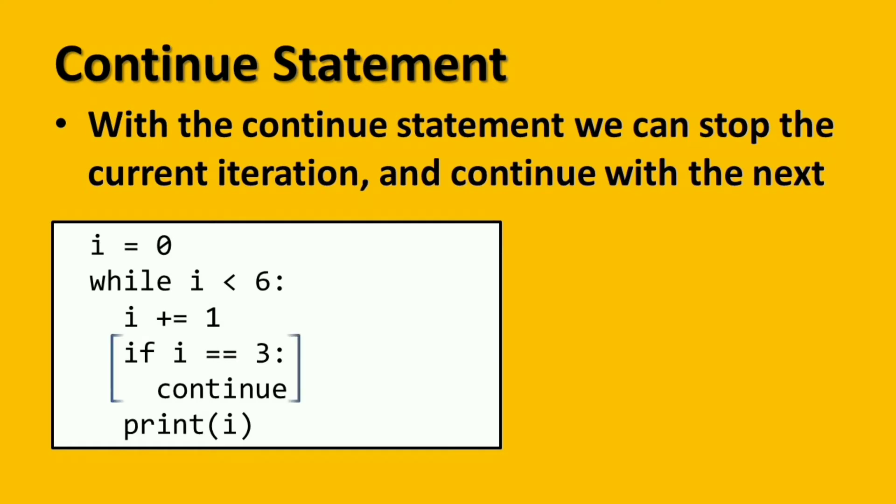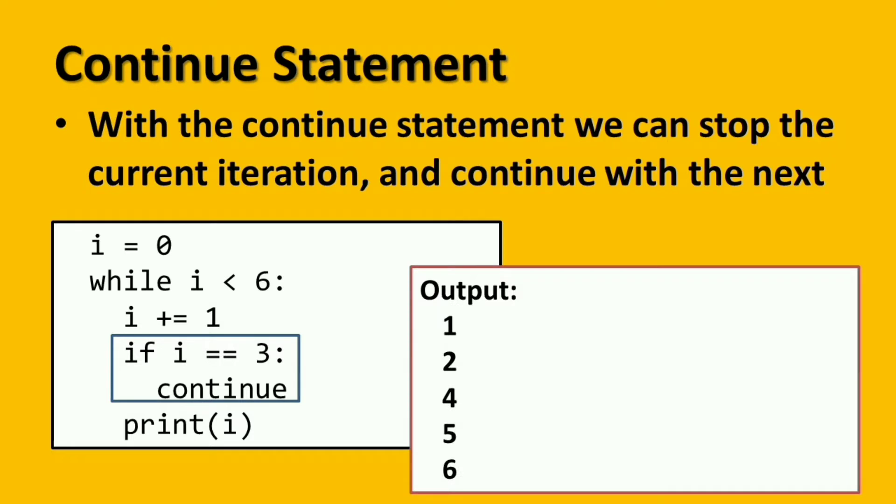Okay, so kung titignan nyo, we have this code. If i is equal to 3, meron tayo yung keyword na continue. And if we're going to run this program, ang output po niya guys, ganyan. Observe, wala yung 3 dun sa output. Bakit nawala yung 3? Because the continue statement is used to skip. So basically, it skips the part when the value of i is equal to 3. So hindi niya gagawin yun, mag-stop siya dun, and pupunta ulit siya dun sa next iteration.